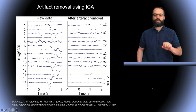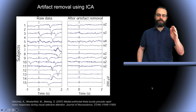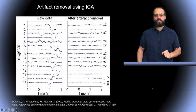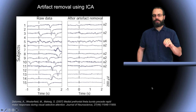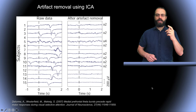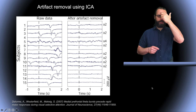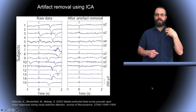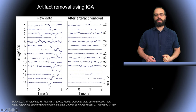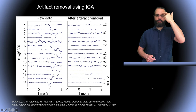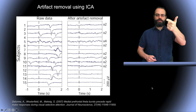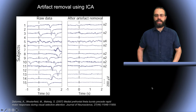Here is another example: on the left you have the raw data from 15 subjects, and on the right you have the data after artifact removal. What's very interesting is that some of these channels were near the eyes — actually eye channels — and we were able to recover cognitive activity on those eye channels after applying ICA.